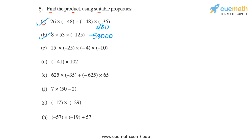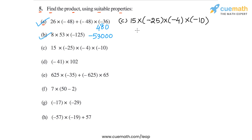Let's come to part C, where we have to calculate the product 15 into minus 25 into minus 4 into minus 10. Instead of calculating left to right, we observe that multiplying minus 25 and minus 4 first is simpler, since their product equals 100. The associativity of multiplication allows us to do this.